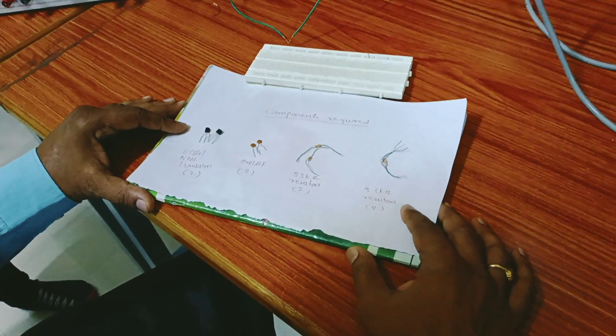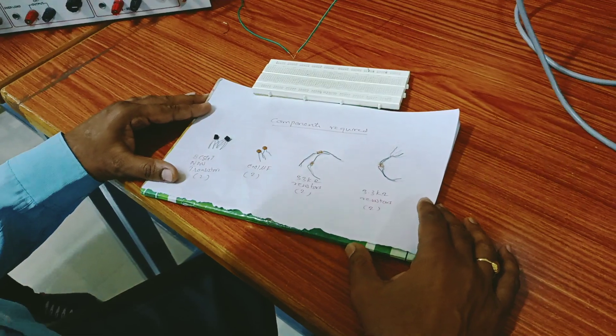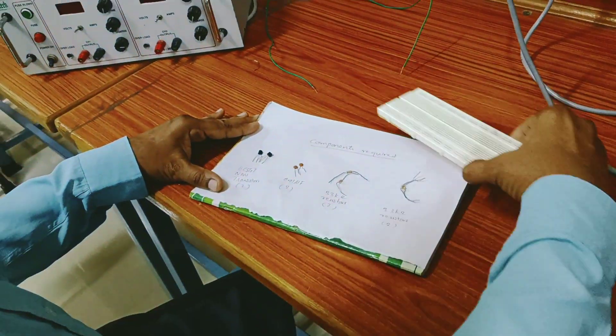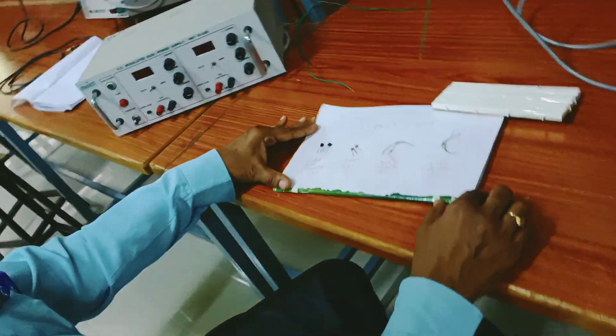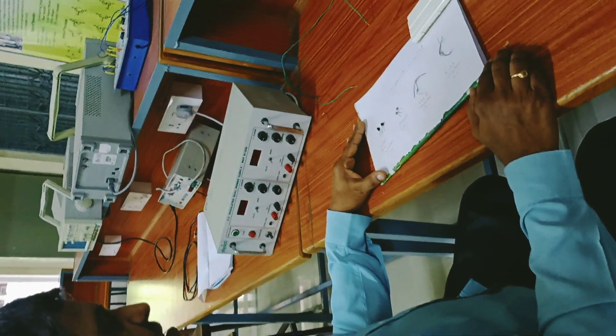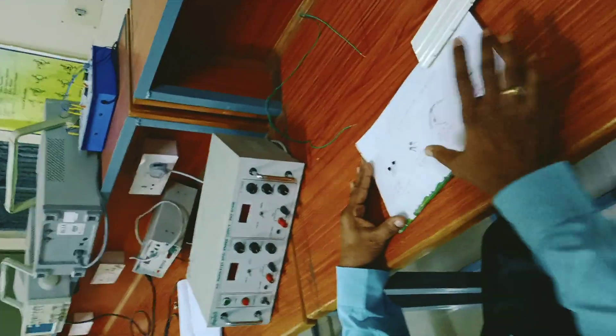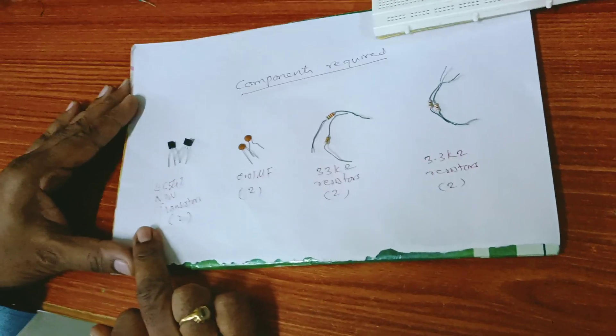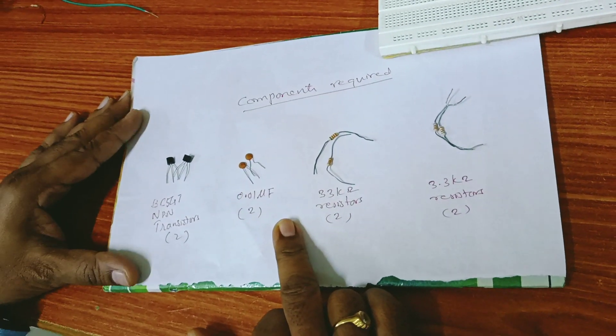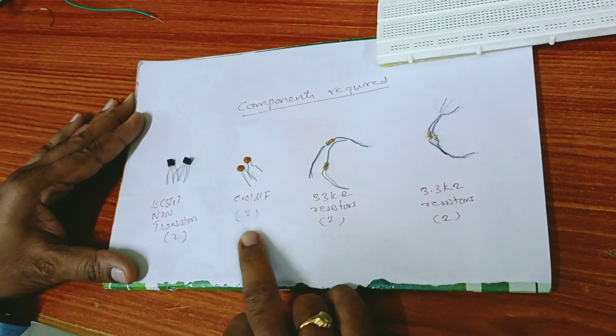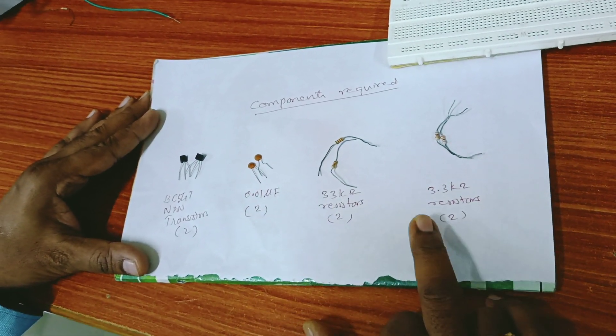Okay, let us do the experiment on astable multivibrator for approximately 2 kilohertz frequency. For this, we are using two NPN transistors BC547, 0.01 microfarad capacitors, two in number.